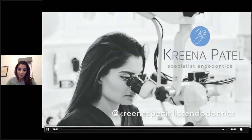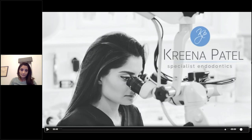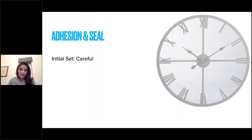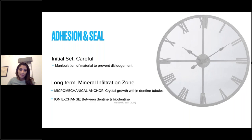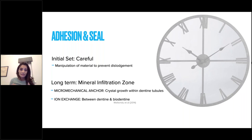If Biodentine gets on the cavity walls, carefully remove it without touching the bulk material. The initial bond of Biodentine to dentine takes time to develop, so handle carefully initially. Long-term, however, the seal of Biodentine to dentine is excellent — crystal growth within dentinal tubules and ion exchange between dentine and Biodentine develop over time to create a very good long-term seal. In the two-stage technique, when you return after a couple of weeks, it will be very well sealed.